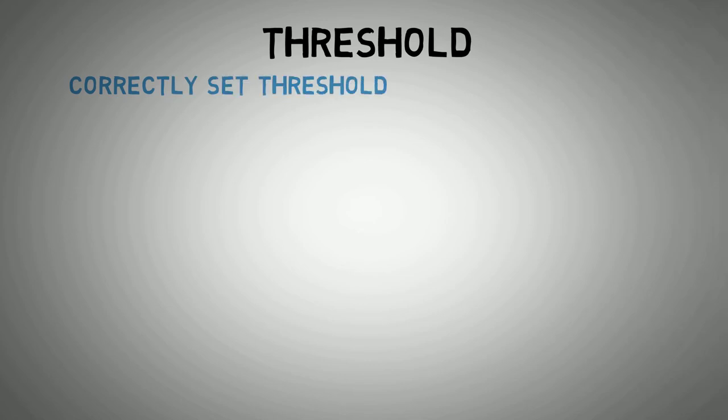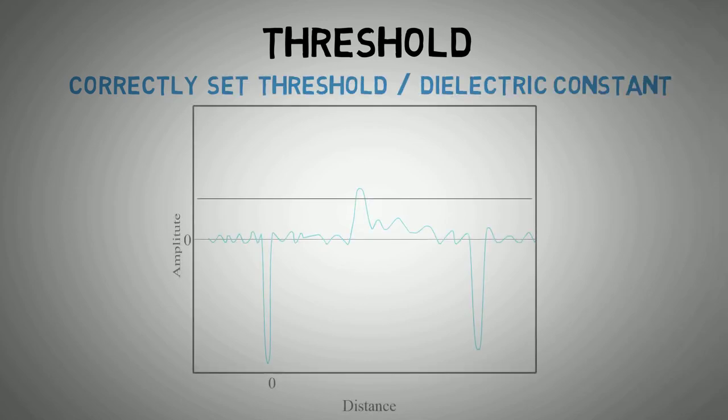The threshold is what determines if a reflection is classed as a level reading or ignored as background by the transmitter. Here is a correctly set dielectric constant and resulting threshold. The threshold is high enough to avoid the noise but low enough to capture the reflection peak caused by the level.